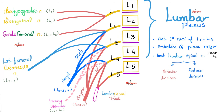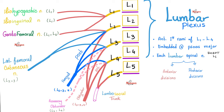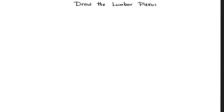L1 is going to give you iliohypogastric, ilioinguinal, and genitofemoral nerves. L2's anterior division contributes to the obturator nerve; its posterior division contributes to the femoral nerve. Additionally, L2's posterior division contributes to the lateral femoral cutaneous nerve, which provides sensory supply to the lateral part of the thigh. Unless you can draw the lumbar plexus from scratch on a blank piece of paper, you haven't truly learned it.